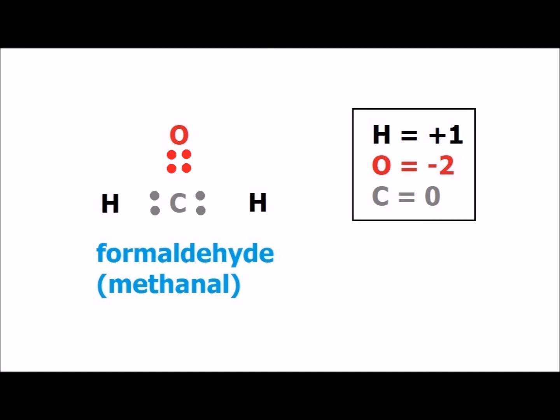Formaldehyde features a carbon-oxygen double bond, and because oxygen is more electronegative than carbon, both of the electron pairs — a total of 4 electrons — are colored red and counted towards oxygen. The remaining 4 electrons in the carbon-hydrogen bonds are colored gray because carbon is more electronegative than hydrogen. The oxidation number of carbon in formaldehyde is equal to zero. Note that an oxidation number of zero does not necessarily imply that the element is in its elemental form, and we see a nice example of that in formaldehyde.